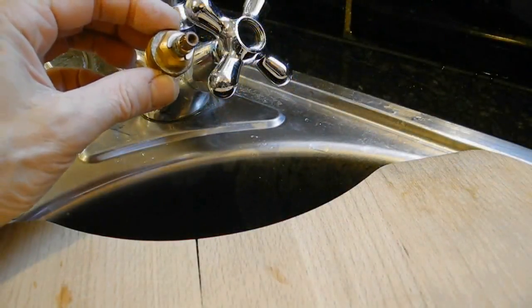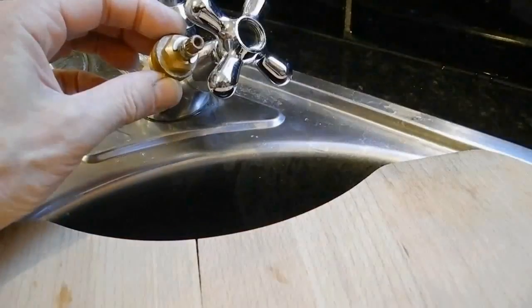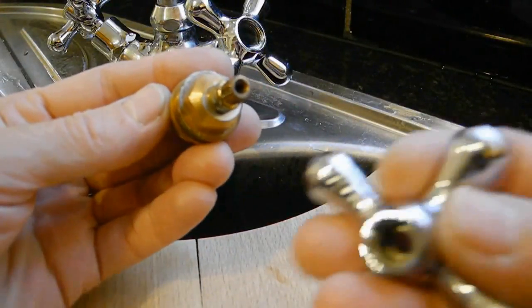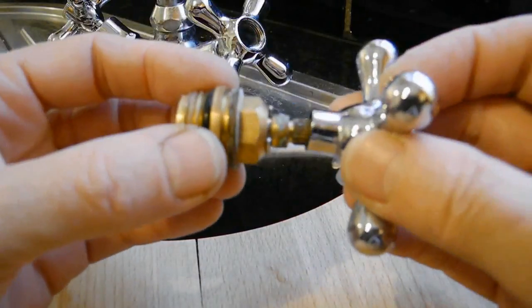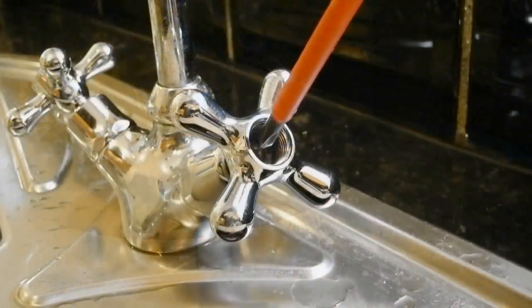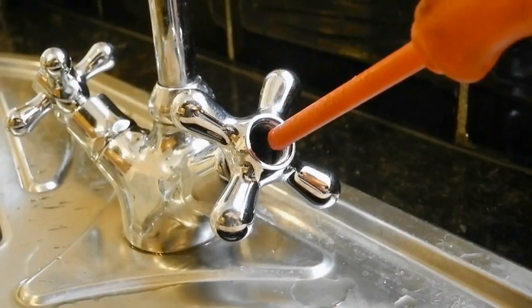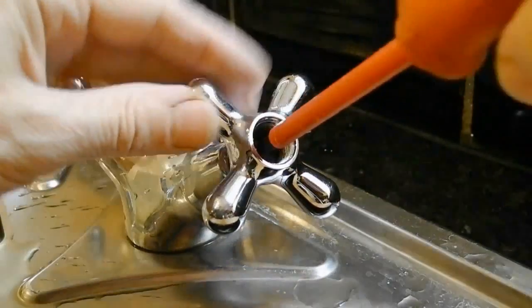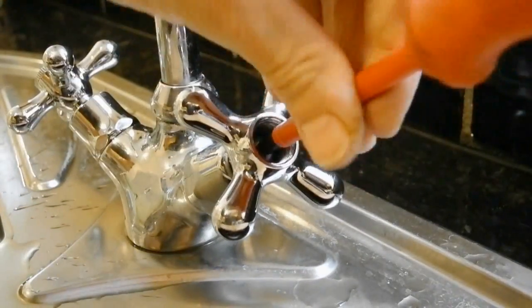This is the cartridge of the tap. It is glued with the head due to lime scale. And now we try to dissolve lime scale from the screw. And now we could unscrew it and remove the head off.